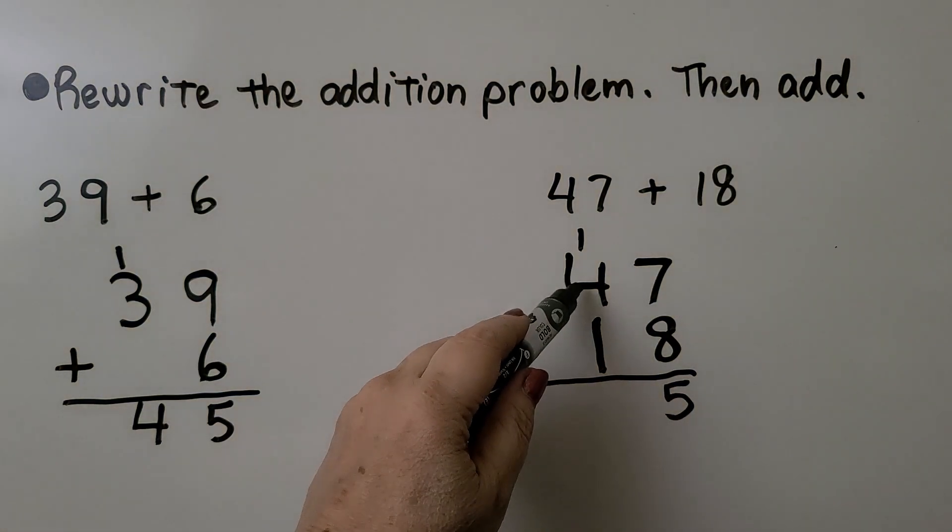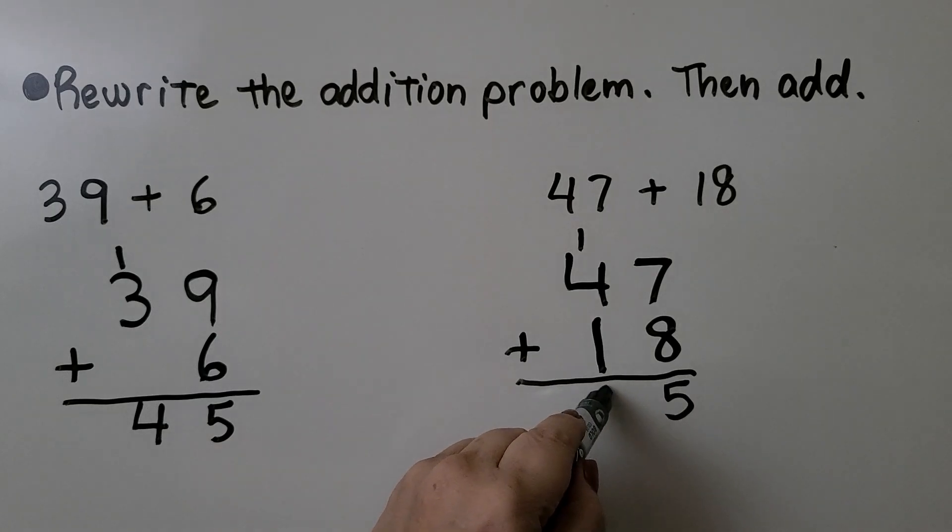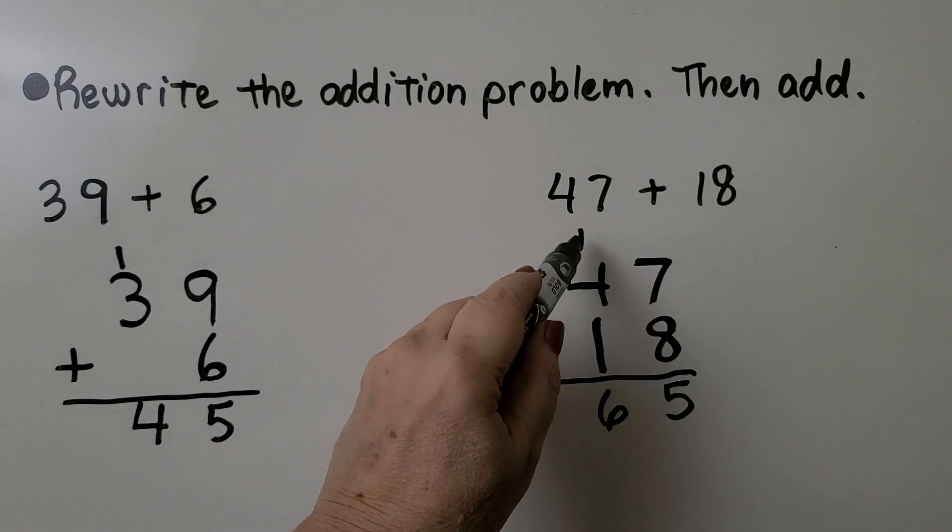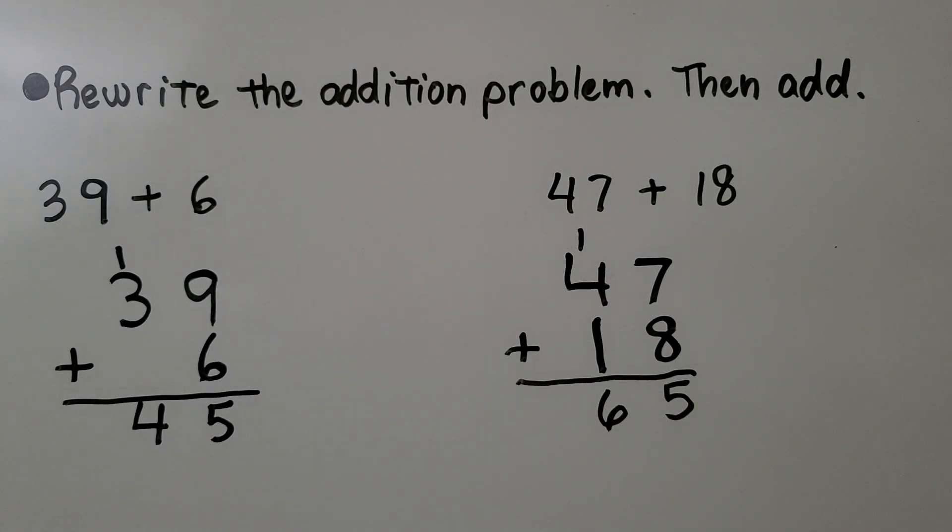Then we add the tens: 4, 5, 6. We remember to add that regrouped 10. 47 plus 18 is equal to 65.